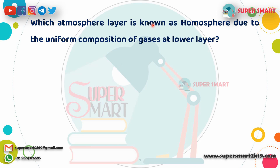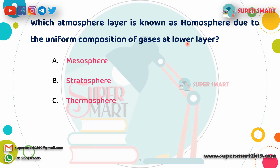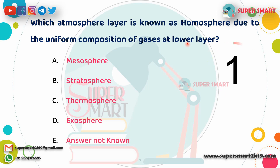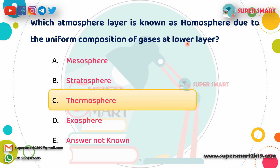Next question: Which atmospheric layer is known as the Homosphere due to the uniform composition of gas at the lower layer? Answer is Thermosphere.